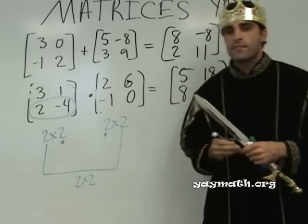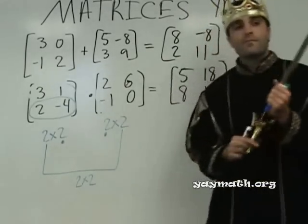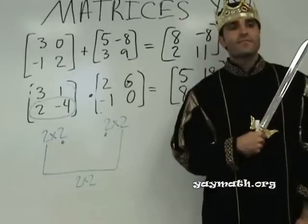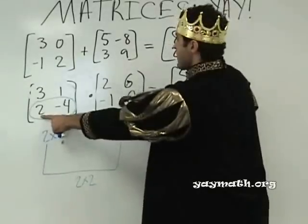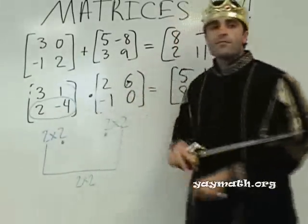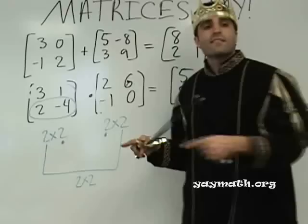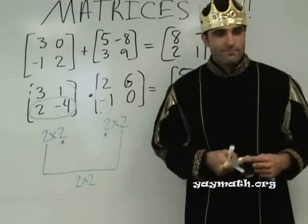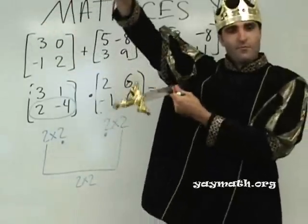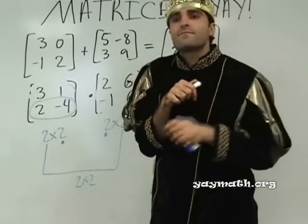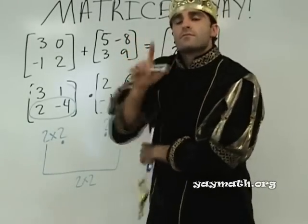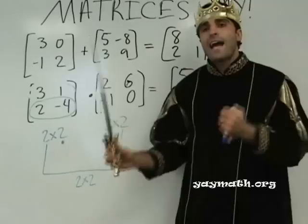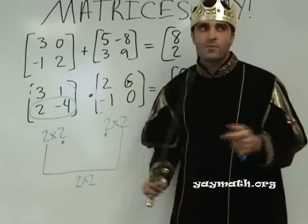Follow-up questions? Two times six is twelve, and negative four times zero is zero, so twelve. Two times six is twelve — yes. Okay, so we did adding and multiplying matrices, and that's where we'll stop. Thank you. Matrices — yay!